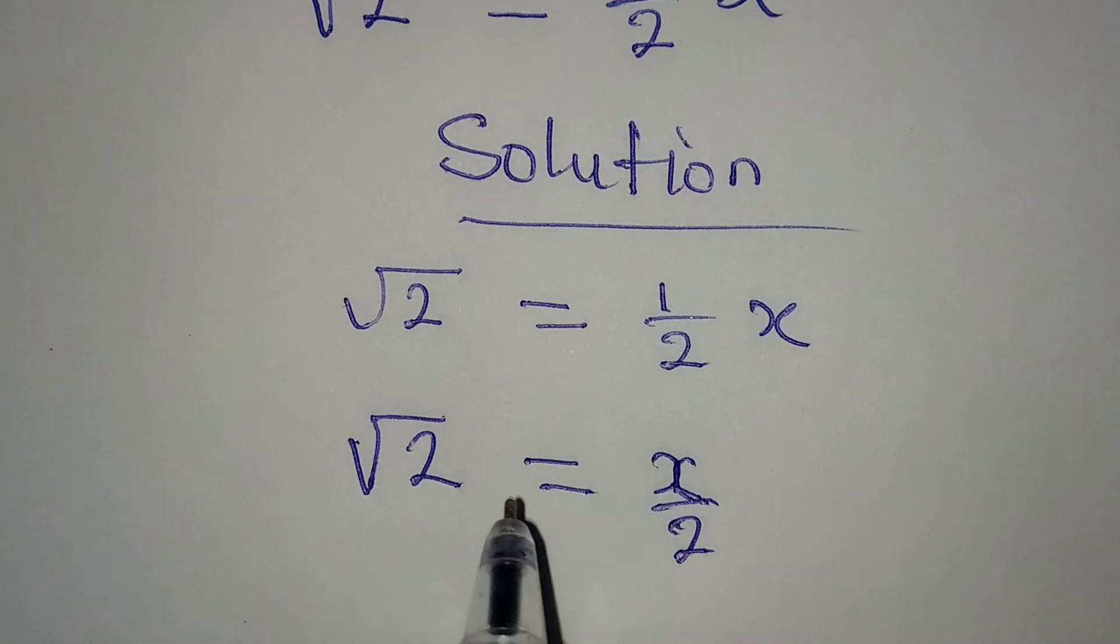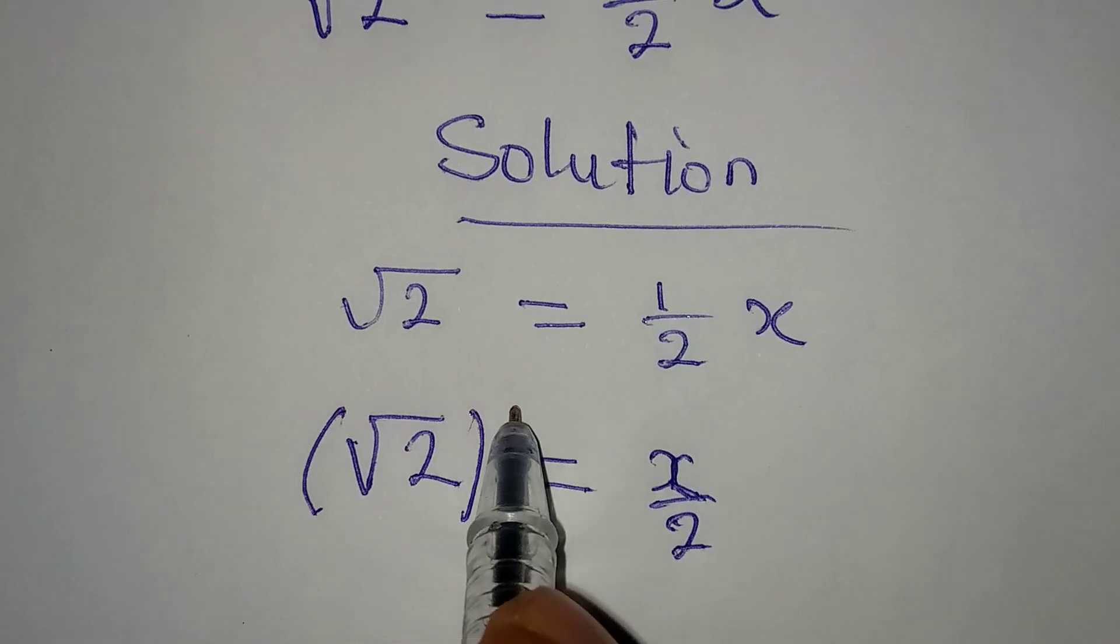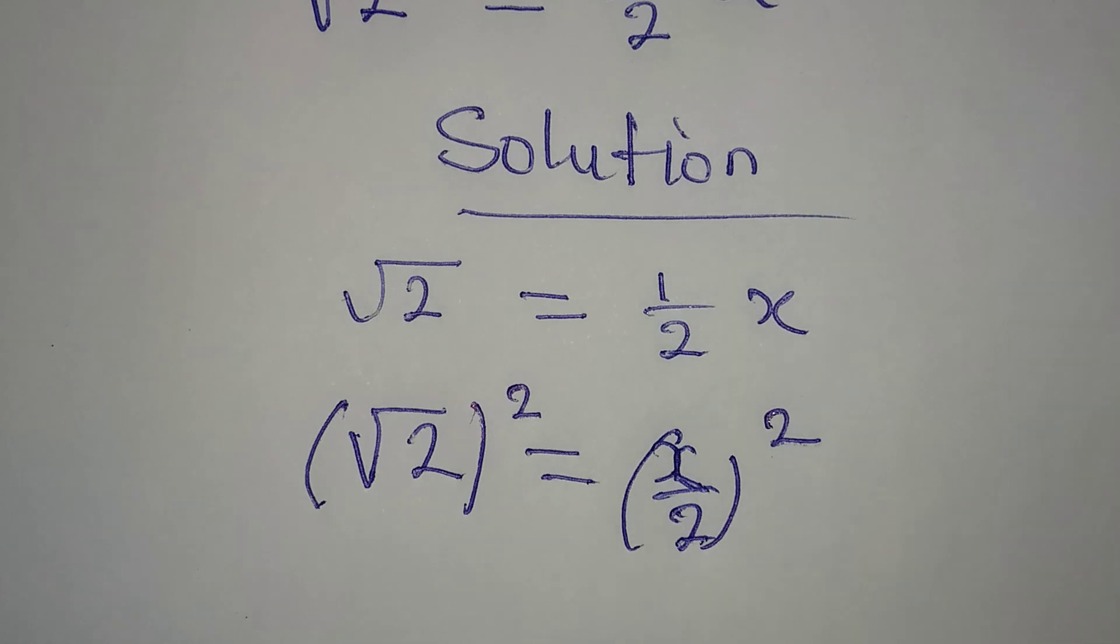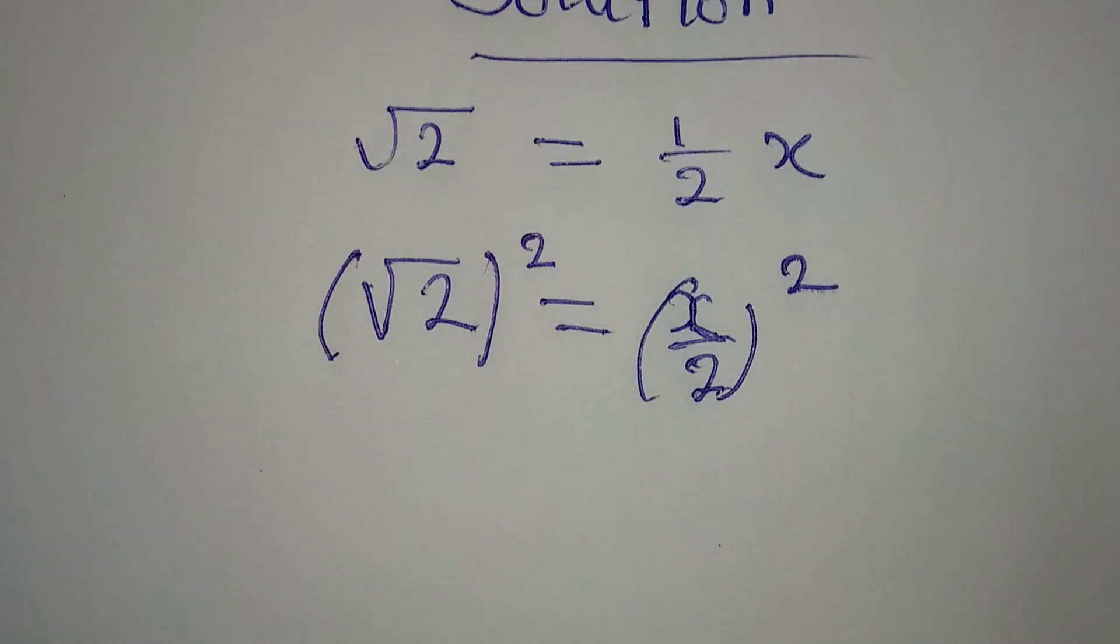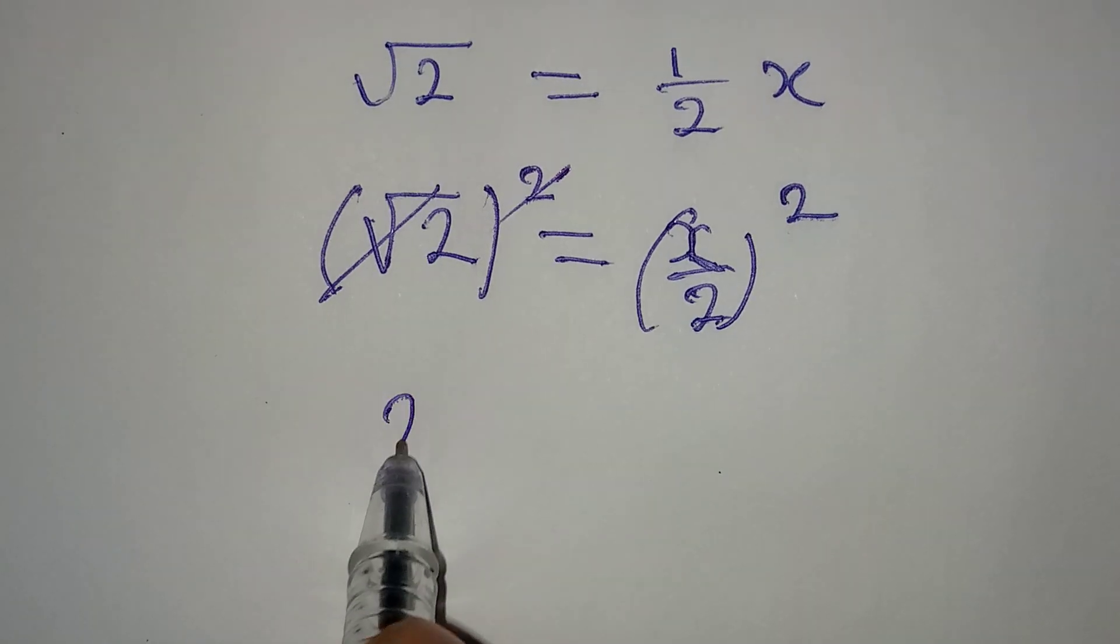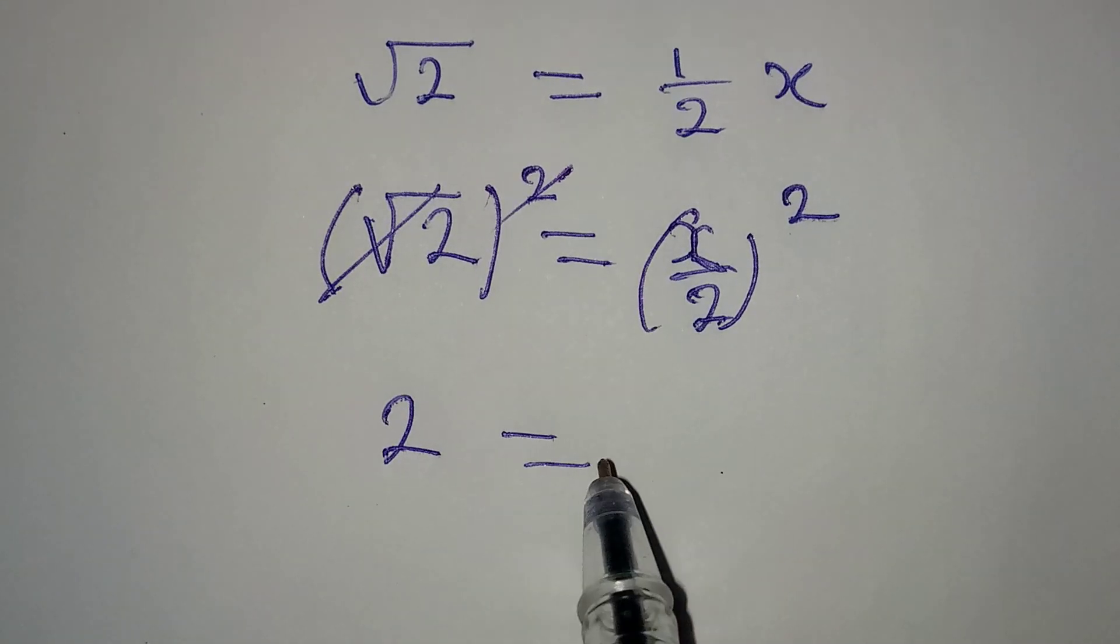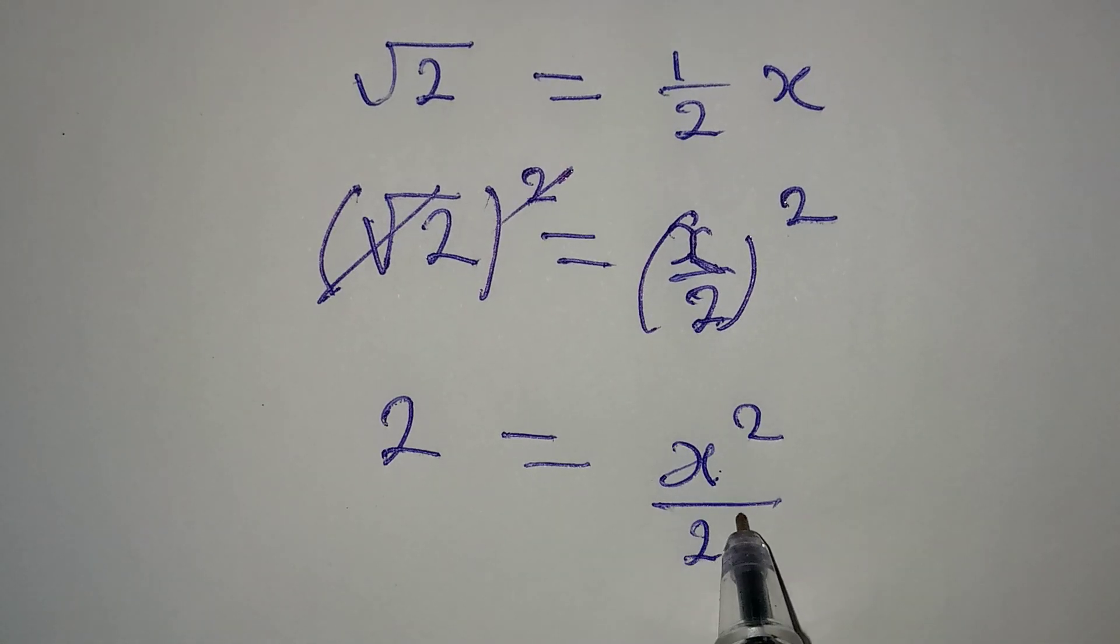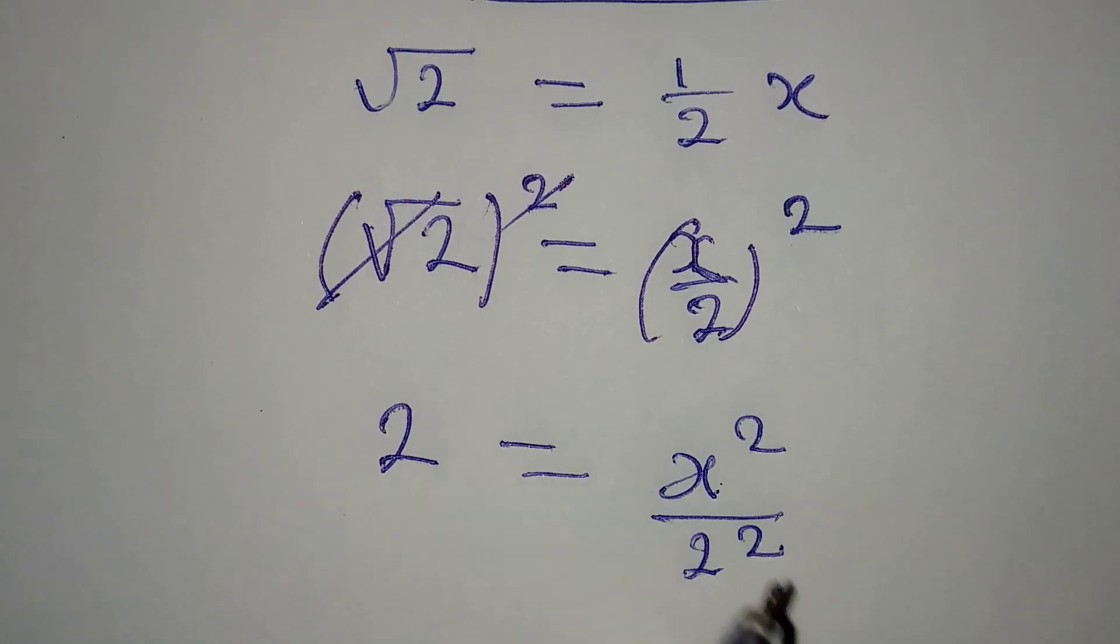To remove this square root, you will simply square this and then equally square whatever you have over there. This will go with this: 2 is equal to X squared over 2 squared, because the square is for both the numerator and the denominator.